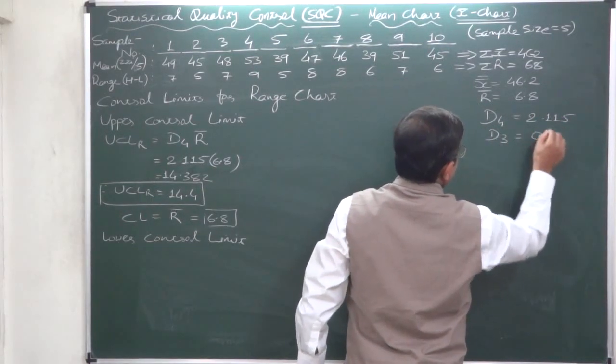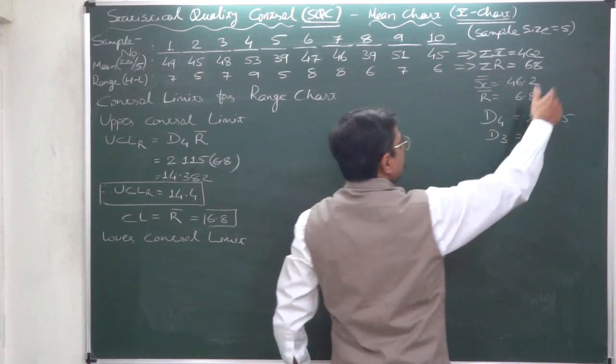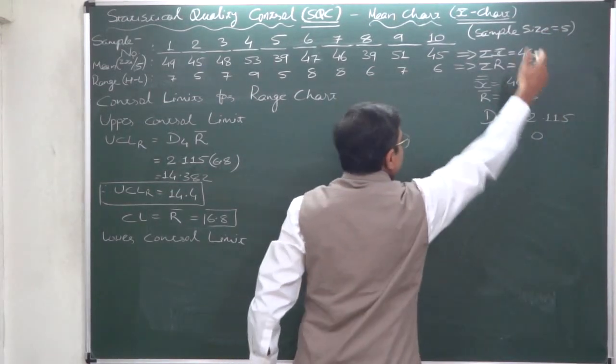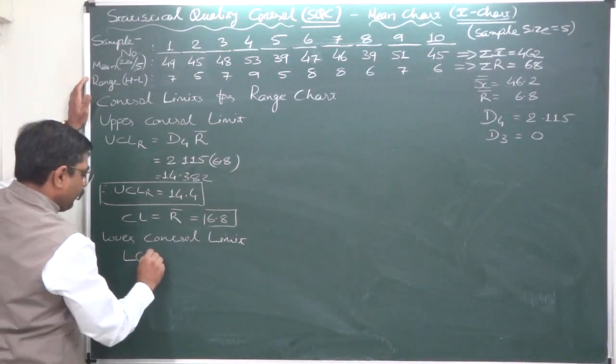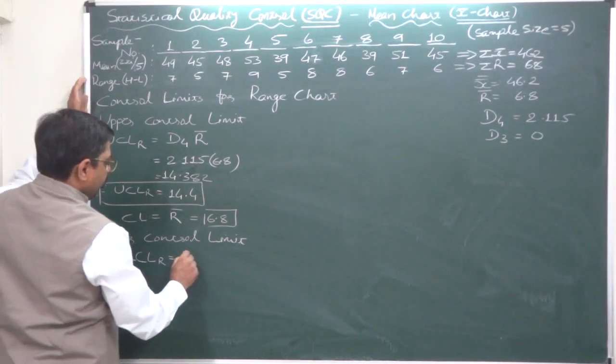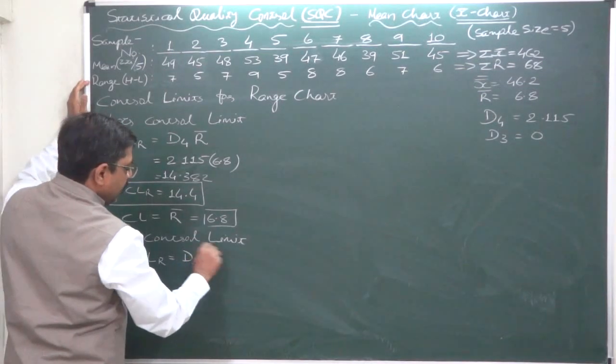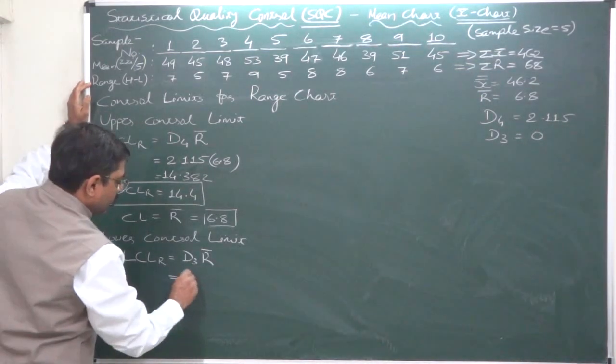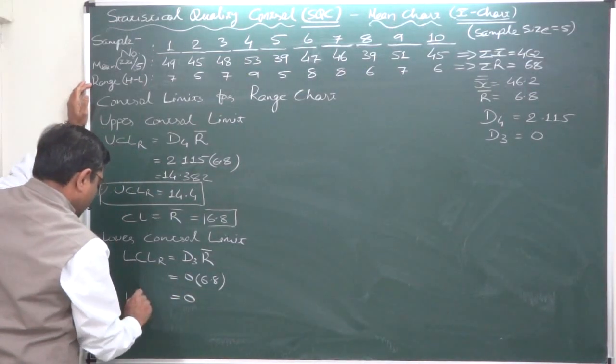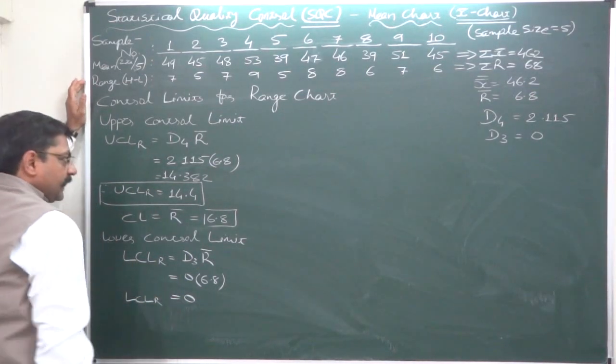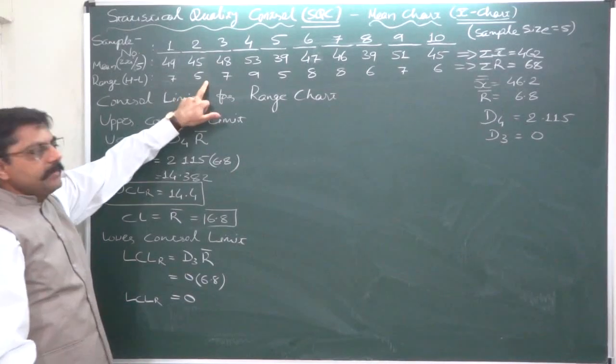And lower control limit: we have already found both D3 and D4 from the table for sample size 5. The formula for lower control limit for range chart is D3 into R bar. As we know that D3 is 0, 0 into 6.8 will be 0. So lower control limit is 0, and since we know that range can never be negative.